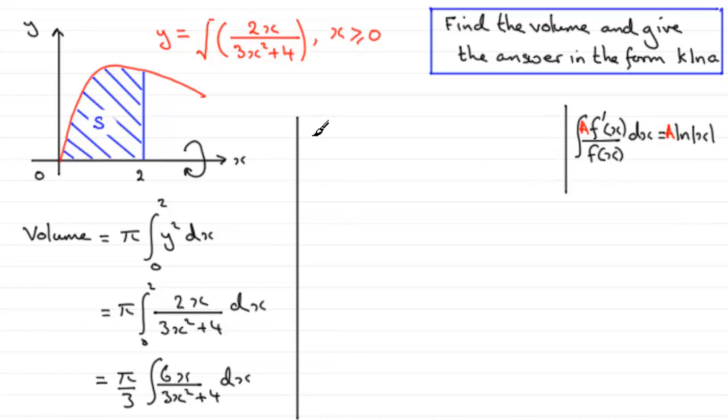So we now know that this is a natural log type. So that volume is now going to equal pi over 3, multiplied by, well, as I say, the integral of this, going from 0 to 2, by the way, I seem to have left off those limits, is going to be the natural log of the denominator, 3x squared plus 4.